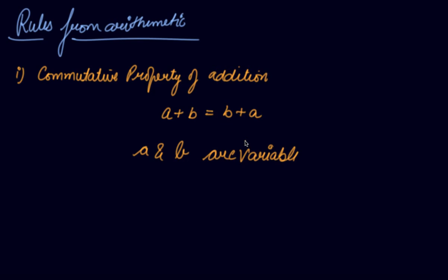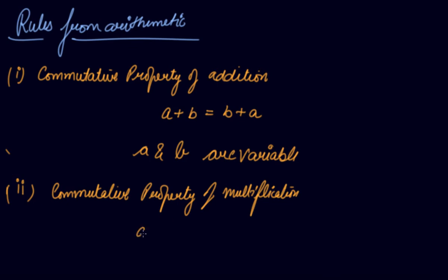A and B we have taken as variables in arithmetic also, so we can easily find out one variable given the other variable. Then we can say commutative property of multiplication. We write it as A times B is equal to B times A. A and B again are variables. If I take A equals 2, B equals 10, then A times B will equal 20.